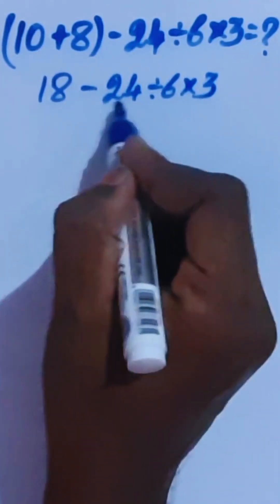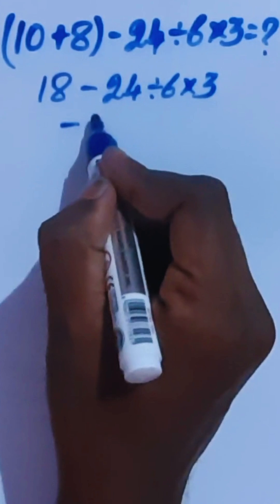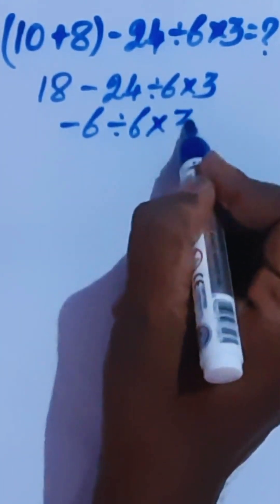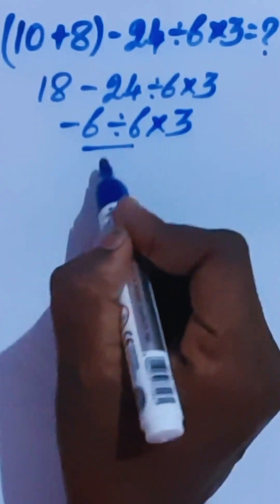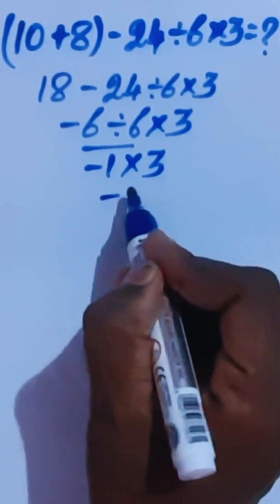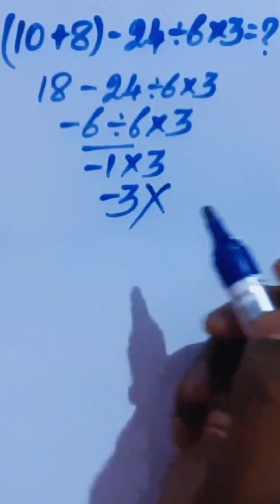Here 18 minus 24 is negative 6 divided by 6 times 3. This is negative 1 times 3. Now negative 3 is the wrong answer.